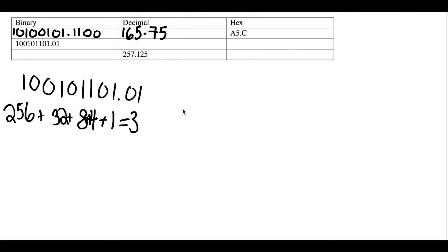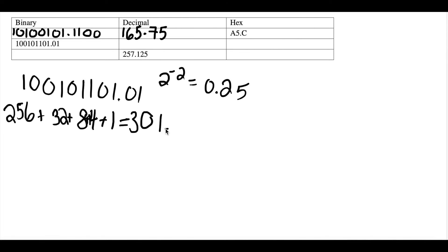Now for the decimal portion, we have 2 to the power of negative 1 in the 0 position, which equals 0. Then 2 to the power of negative 2 in the 1 position, which equals 0.25. So we end up getting 301.25, and that's the final answer for this binary-to-decimal conversion. We can go ahead and fill that in as 301.25.